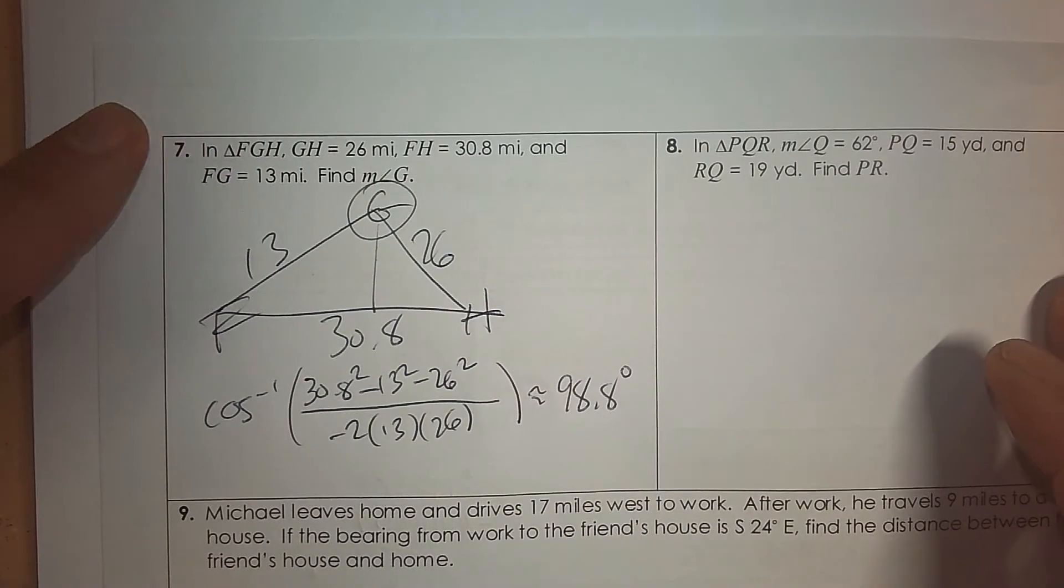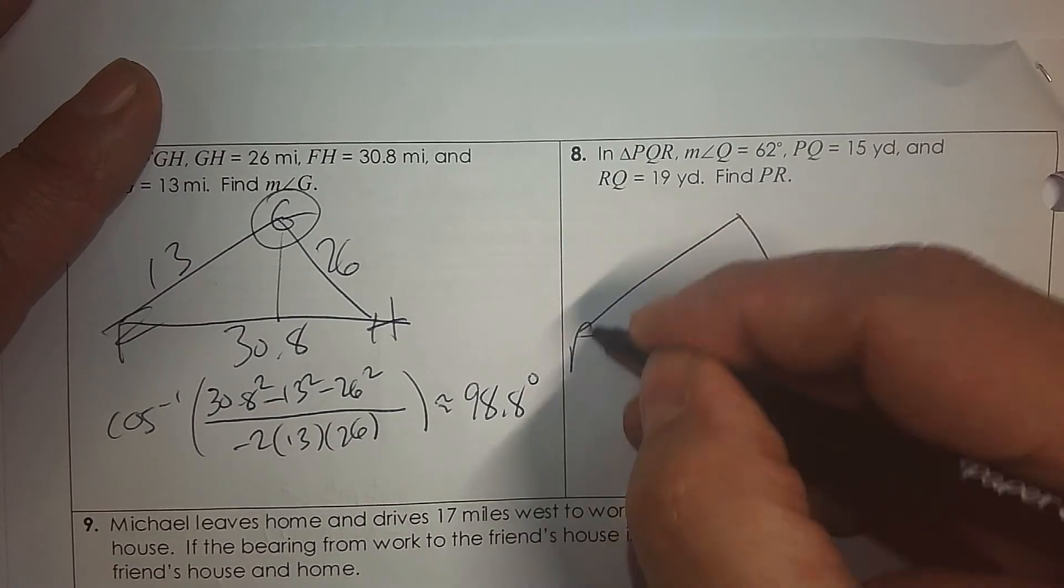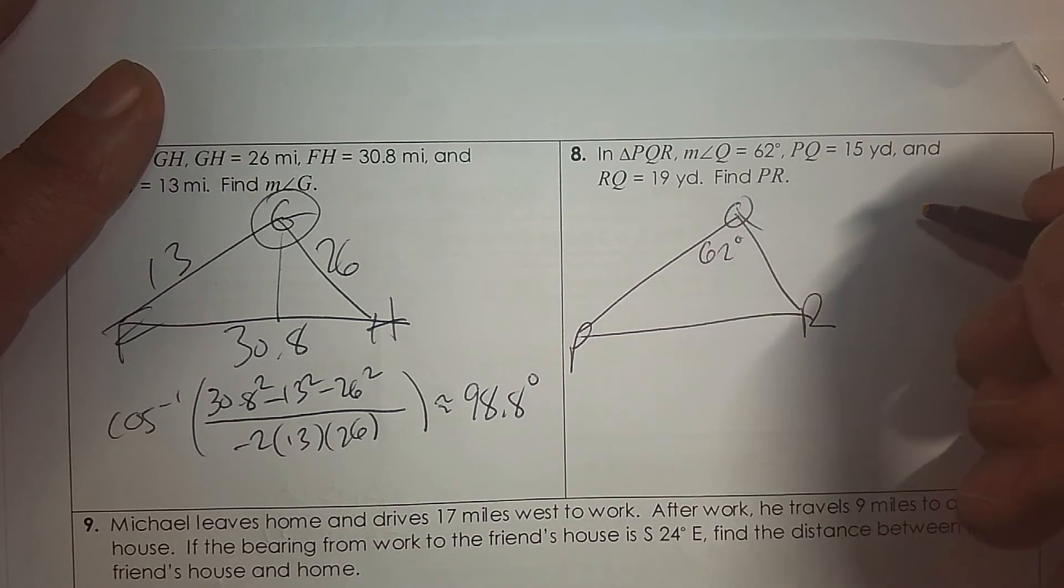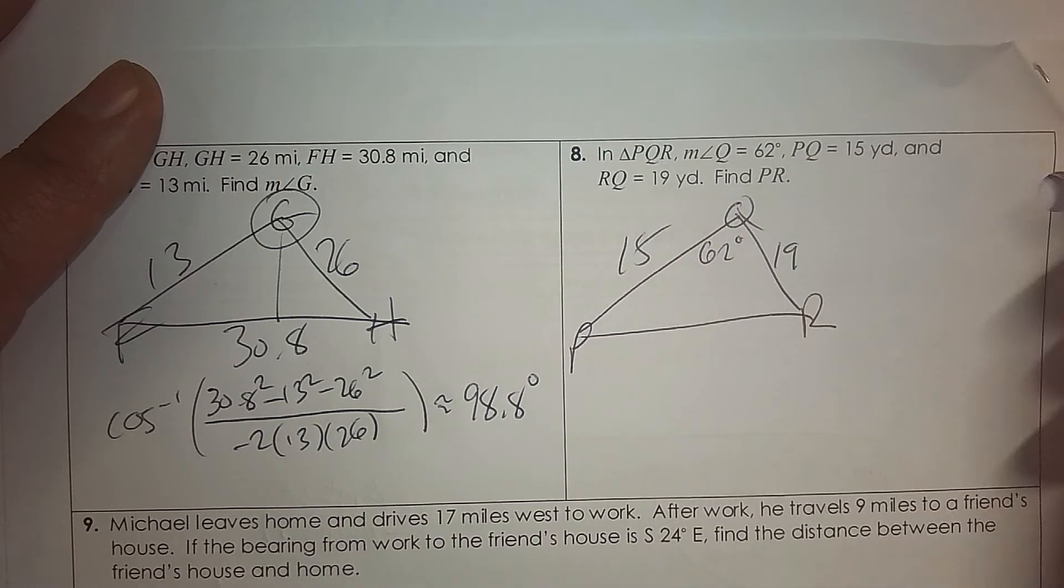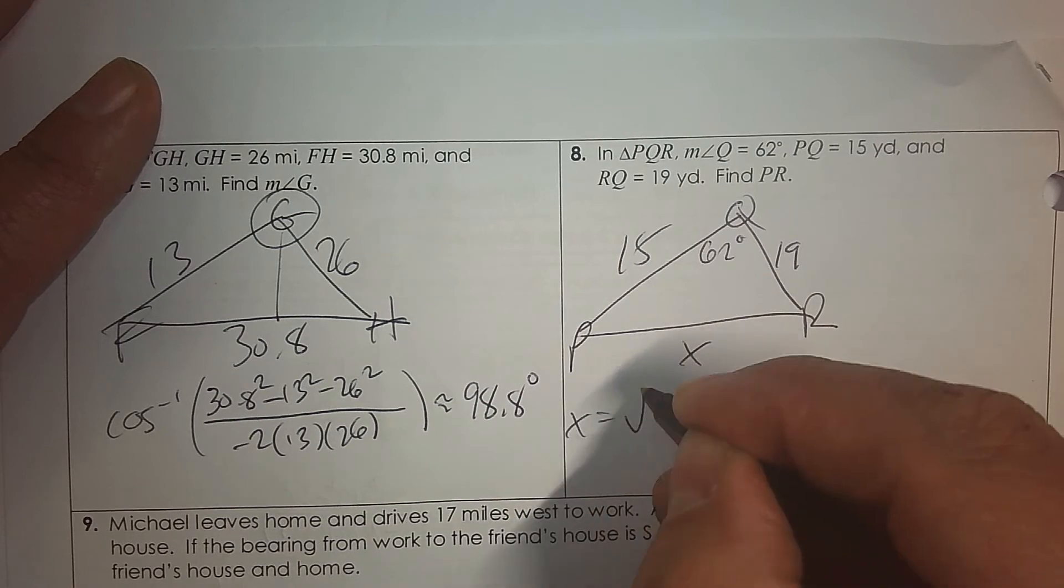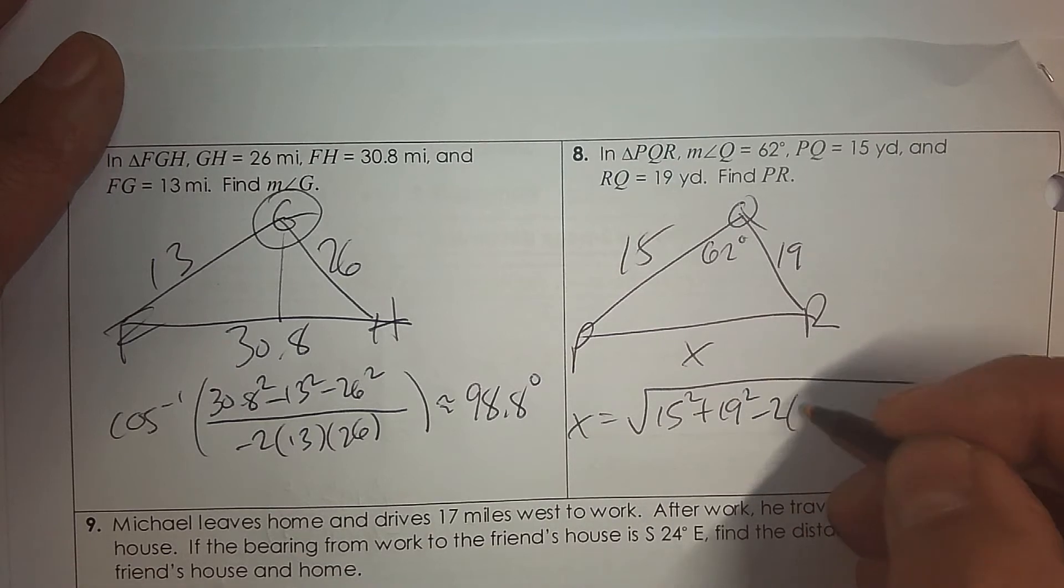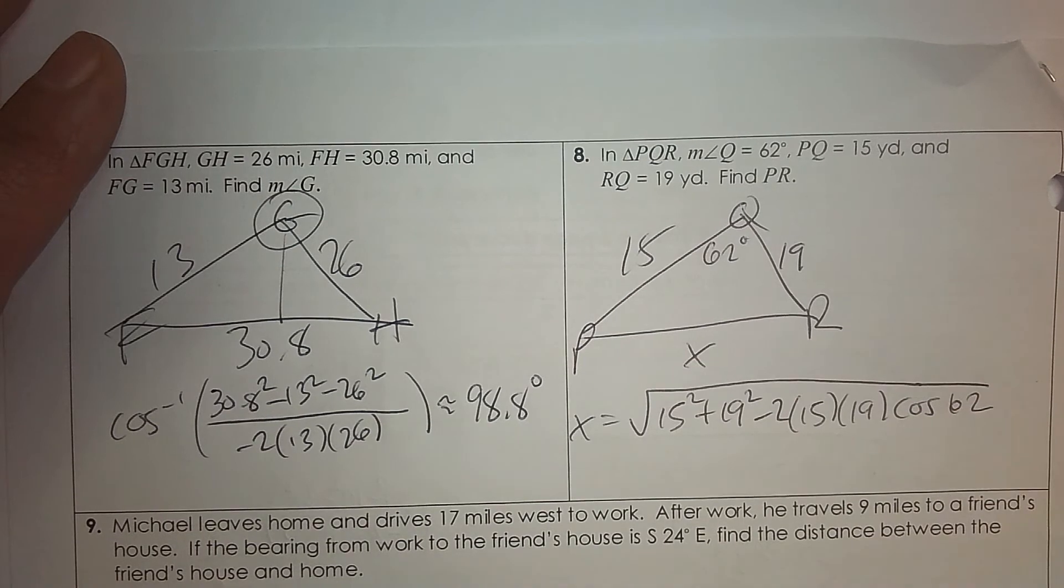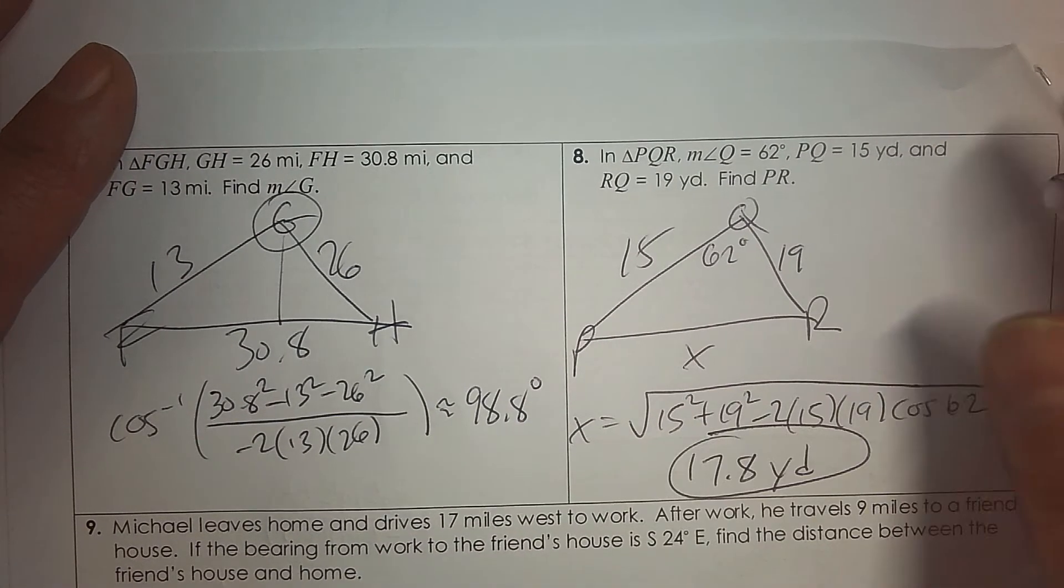One more time. You try it. And then press play to see if you did it right. So we've got triangle PQR. It says angle Q is 62. P to Q is 15. R to Q is 19 yards. Find PR. So to find that, it's a big square root. So it's 15 squared plus 19 squared. Subtract 2. 15 times 19. And then the cosine of the angle in between them, which is 62. Press pause and type it in your calculator. Then press play and see if it's right. 17.8.